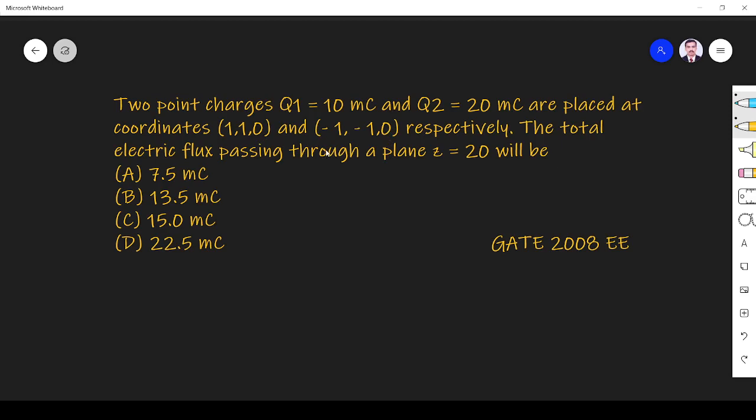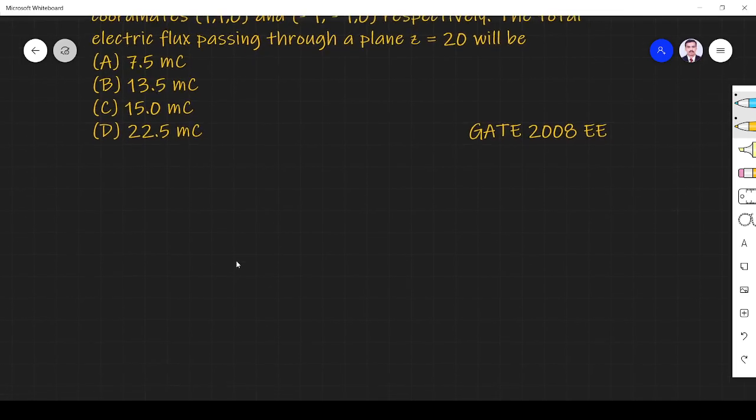The total electric flux passing through z equals 20 plane. So what they are asking is: what is the electric flux passing through z equals 20 plane?